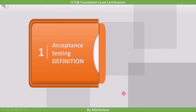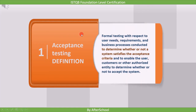Now we'll discuss the definition of acceptance testing. Acceptance testing is performed when the complete system has been implemented. Once the system is ready, we test to see if we can accept its performance. The official definition is: formal testing with respect to user needs, requirements, and business processes, conducted to determine whether or not a system satisfies the acceptance criteria, and to enable the user, customer, or other authorized entity to determine whether or not to accept the system.